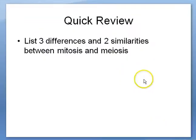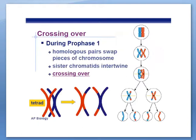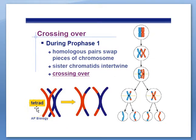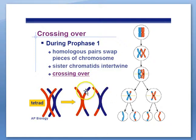Quick review: Crossing over. During prophase I, homologous pairs swap pieces of chromosomes. The group of four sister chromatids all next to each other is called a tetrad — tetrad means four sister chromatids, like the four pieces in Tetris. During this time, we swap little pieces of chromosomes at the tips, which increases genetic diversity in the chromosomes being made. This is another source of genetic variation within the sex cells being made.